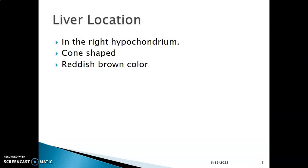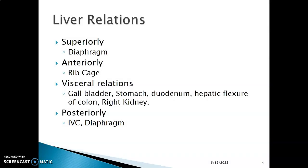The liver is cone-shaped and it's a reddish-brown organ located in the right hypochondrium of the abdomen. The relations of the liver: superiorly you have the diaphragm, anteriorly you have the ribcage, and posteriorly you have the inferior vena cava and the diaphragm.